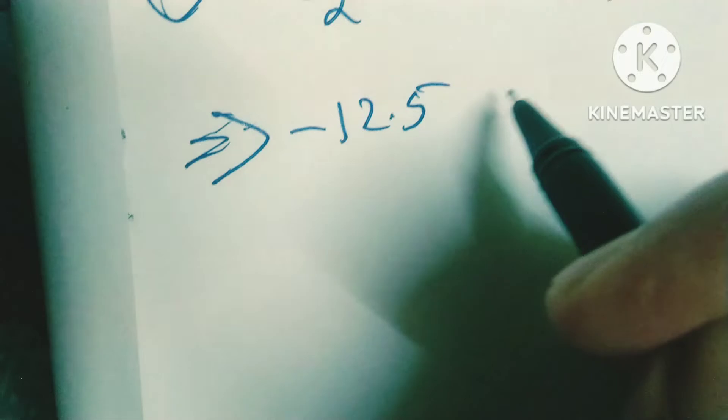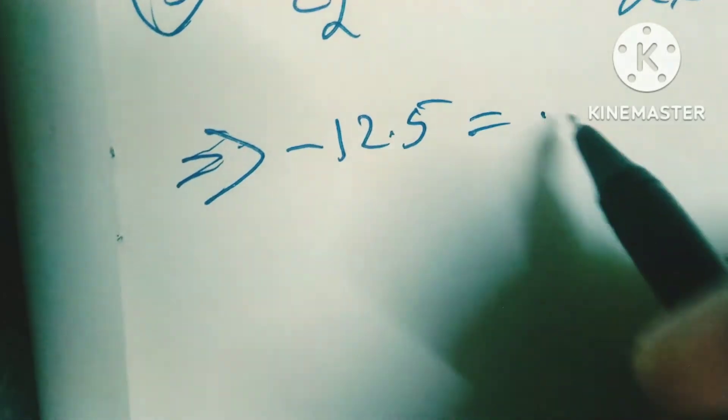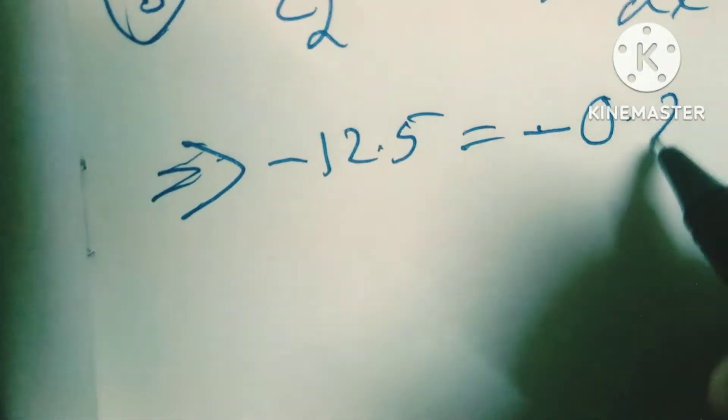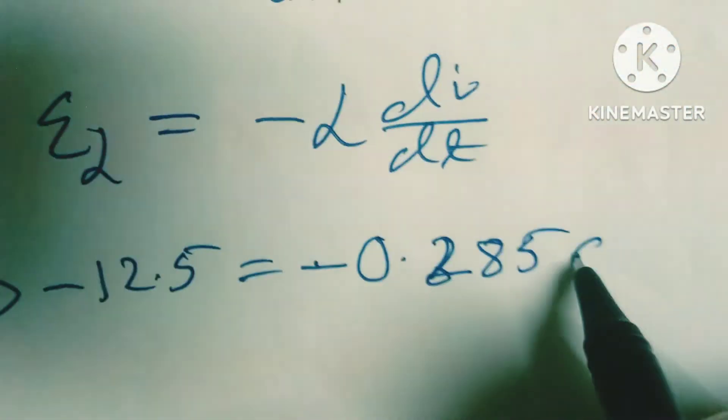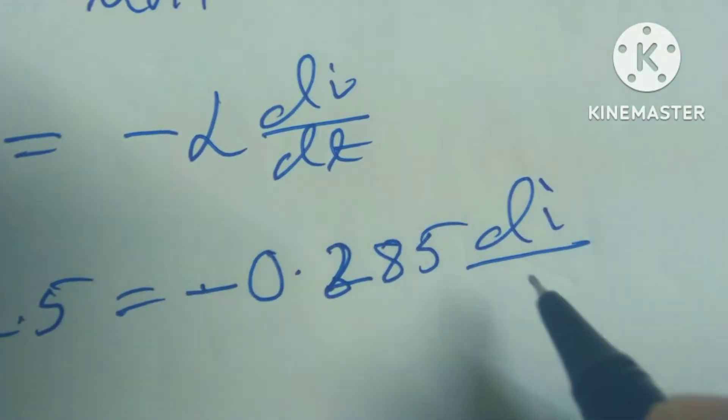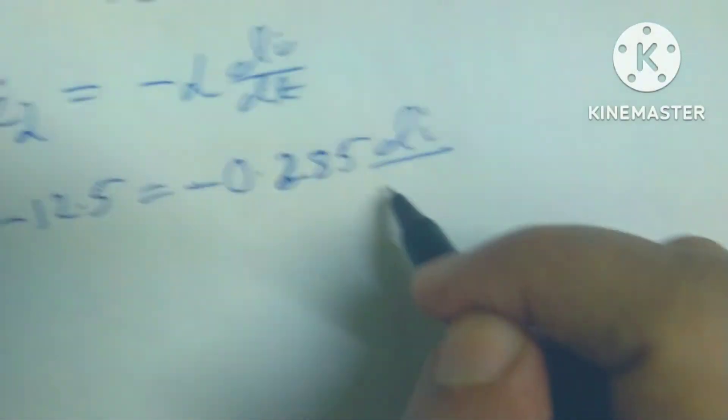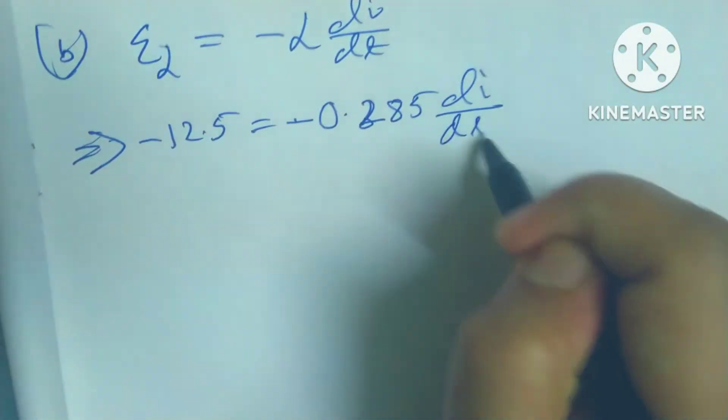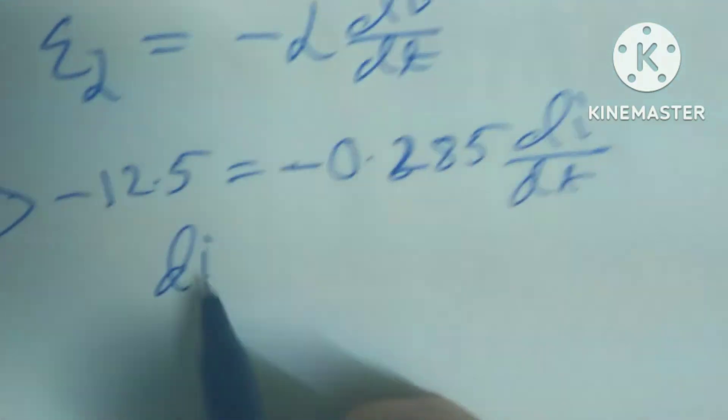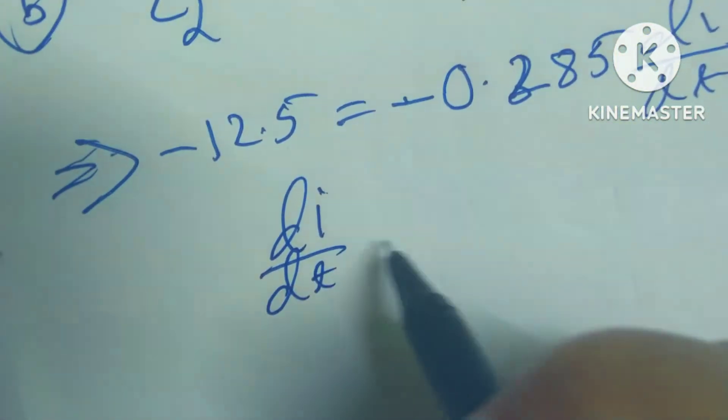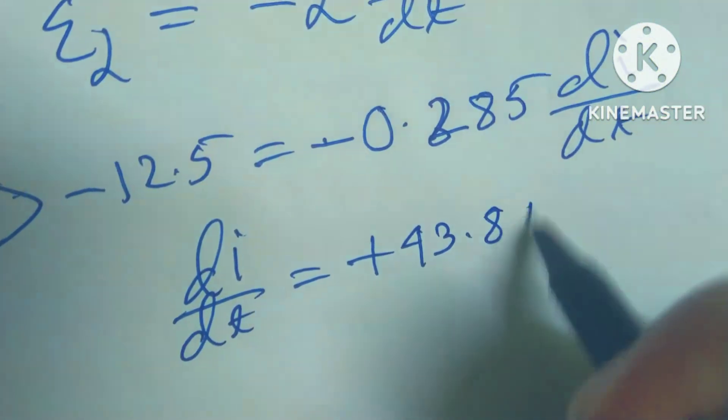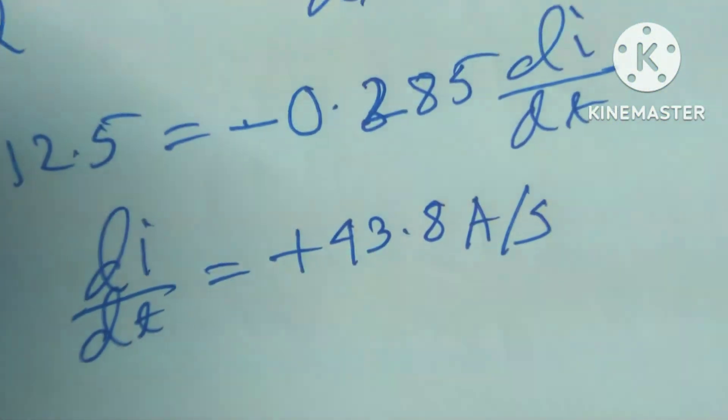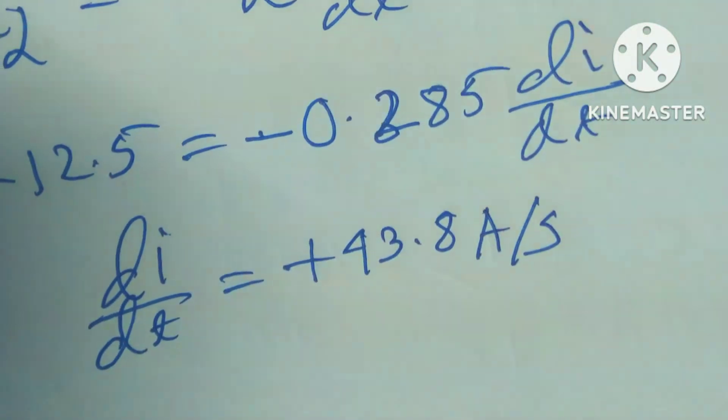So -12.5 = -0.285(di/dt), which gives 12.5 = 0.285(di/dt). Therefore di/dt equals +43.8 amperes per second.